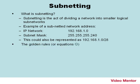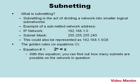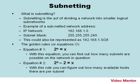Let's talk about the golden rules or equations. Equation one: two to the n power equals x. With this equation, you can find out how many subnets are possible on the network in question. And equation two: two to the n power minus two equals x. With this rule, you can figure out how many available hosts there are per subnet.